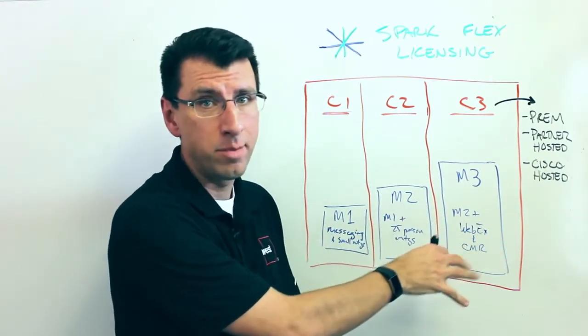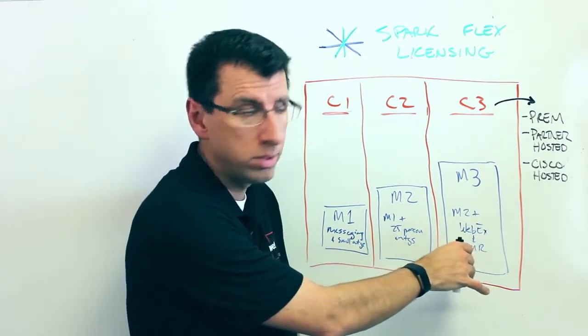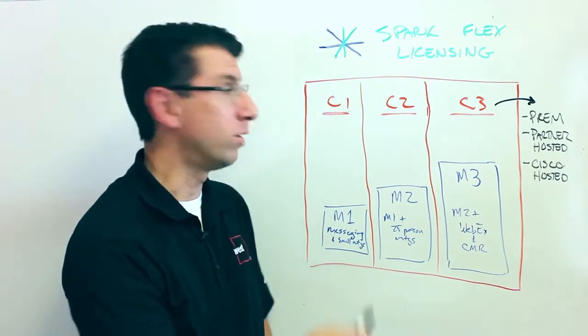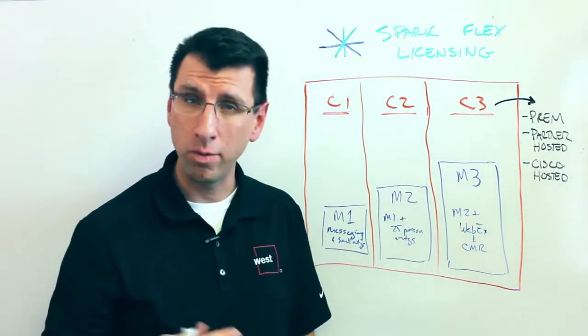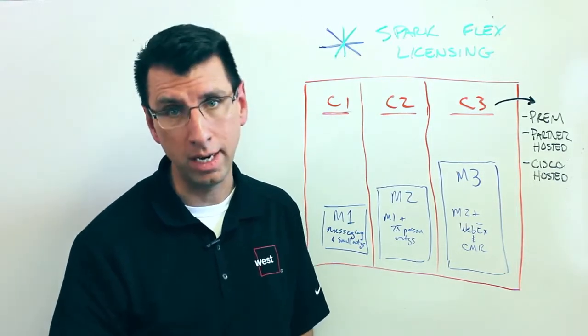Now those are all Spark Flex licensing options. You can license M1, M2, or M3 SKUs. But if you want, you can add in calling capability to those. And those have the corresponding C1, C2, and C3. All that really does is it adds in calling capability on top of the message and meeting capability.